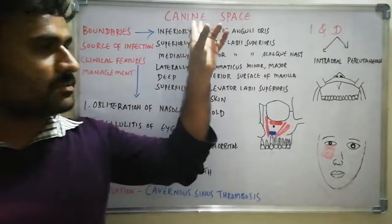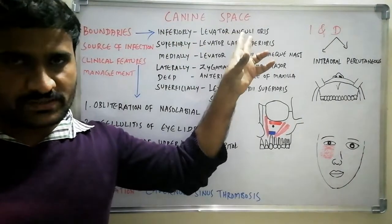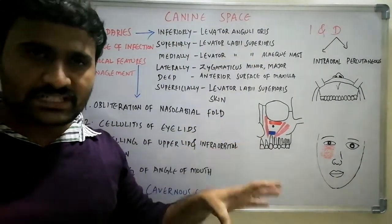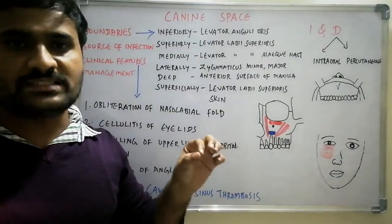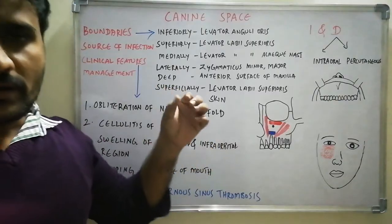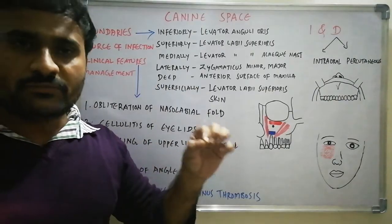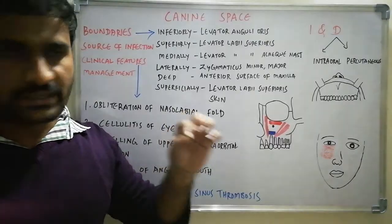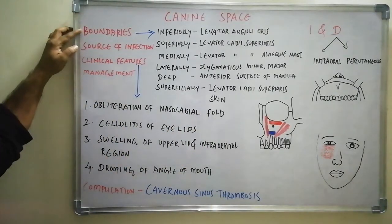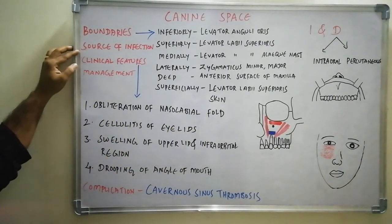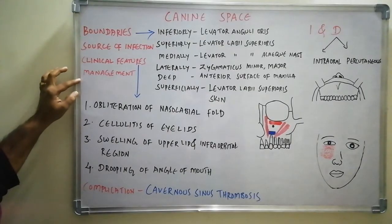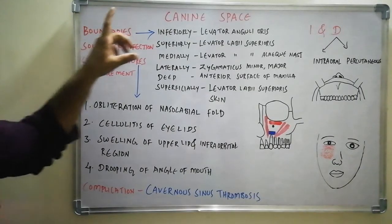In this video we will discuss canine space. Canine space is one of the primary spaces of the maxilla, primarily involved in the direct spread of infection from the canine tooth. We will cover boundaries, source of infection, clinical features, and management.